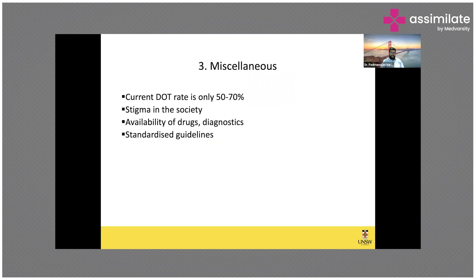Among miscellaneous factors, the current directly observed therapy rate is only 50–70%. There is also big stigma in society — people still don't want to reveal their TB diagnosis, though prominent figures like Amitabh Bachchan and many actors and actresses have come forward to advertise against stigma. Another important development is the push to make new TB drugs generic — for example, bedaquiline was recently declared a generic drug in India after the Supreme Court turned down Johnson & Johnson's request to renew their patent.